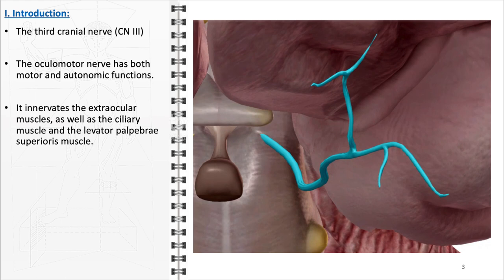Specifically, it innervates the superior, inferior, and medial rectus muscles, as well as the inferior oblique muscle. In addition to these muscles, the oculomotor nerve also supplies the levator palpabri superioris muscle. This muscle is crucial for eyelid elevation, enabling us to open our eyes. The autonomic functions of the oculomotor nerve are equally vital. It innervates the ciliary muscle, which plays a key role in controlling the shape of the lens for focusing on objects at different distances. It also innervates the sphincter pupillary muscle, which constricts the pupil in response to light — the pupillary light reflex — or during near-vision tasks.